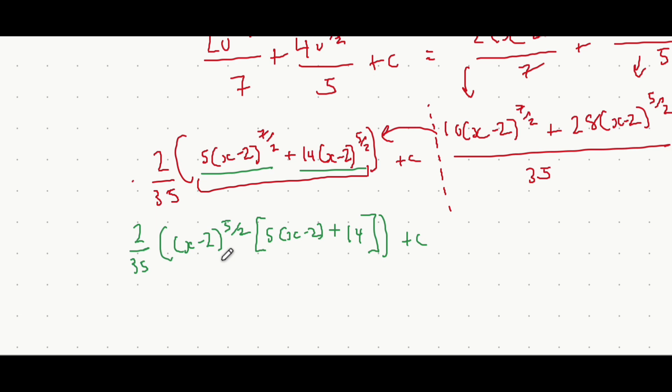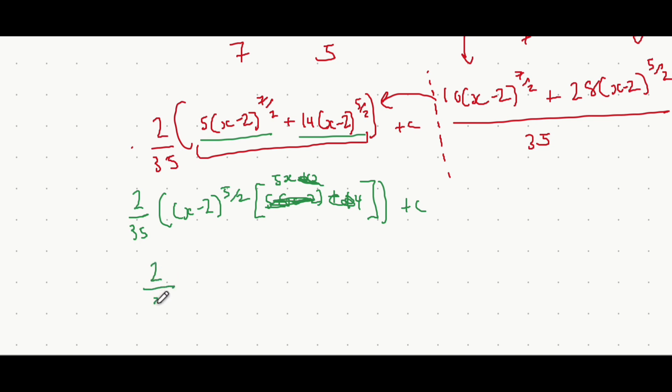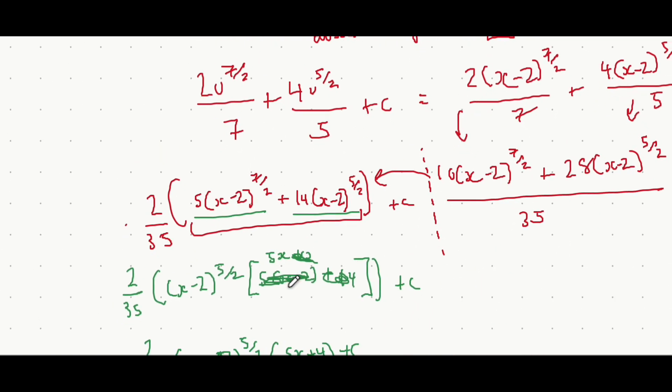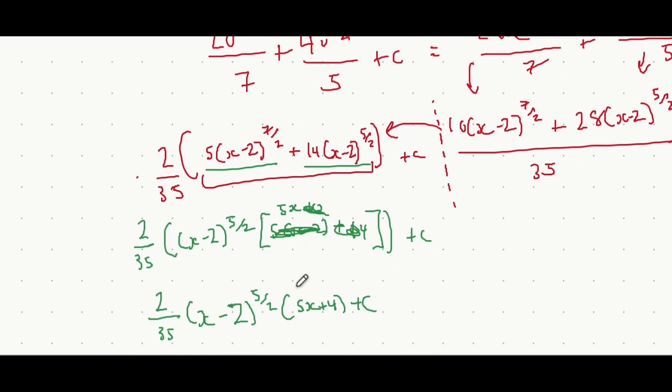This expands to 5x minus 10, just to save myself a bit of working out space. We have 5x minus 10 plus 14, minus 10 plus 14 is just plus 4. And so our final answer we get to is 2 over 35, x minus 2, all to the power of 5 over 2, and then multiply it onto that, 5x plus 4, all plus c. That should be the final answer. Yeah, it's this here. I just wrote this term and this term the other way around.